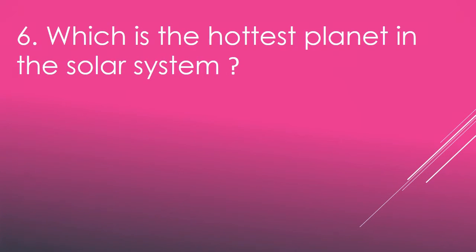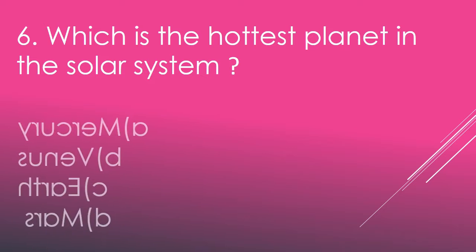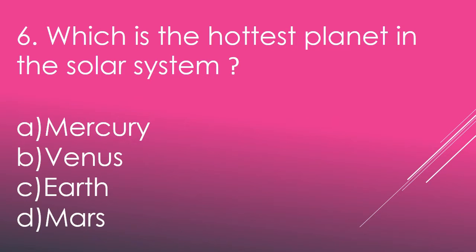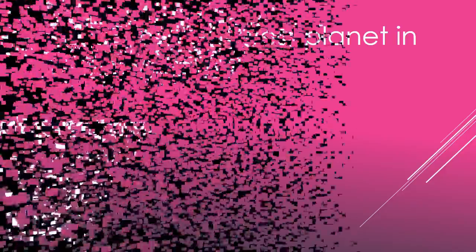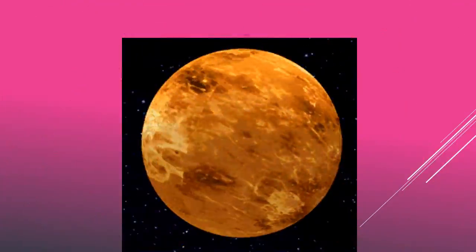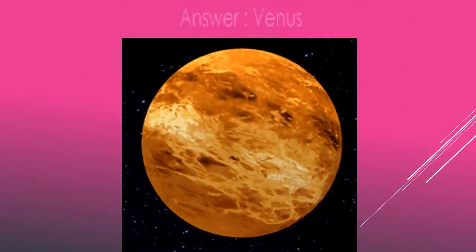Which is the hottest planet in the solar system? Mercury, Venus, Earth, Mars. The answer is Venus.